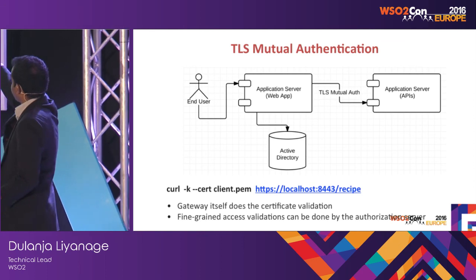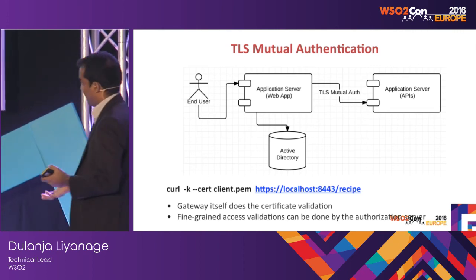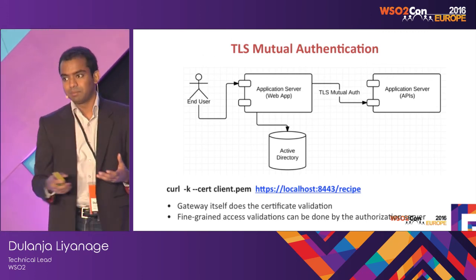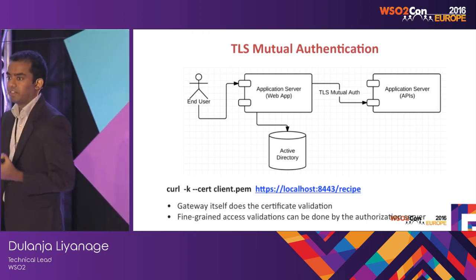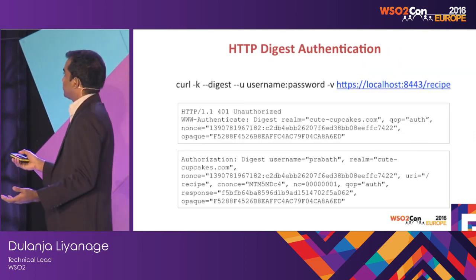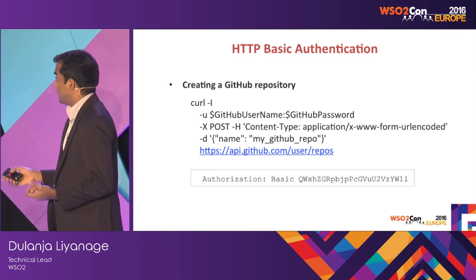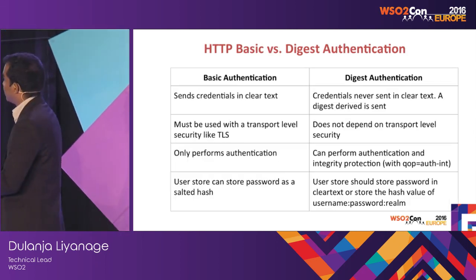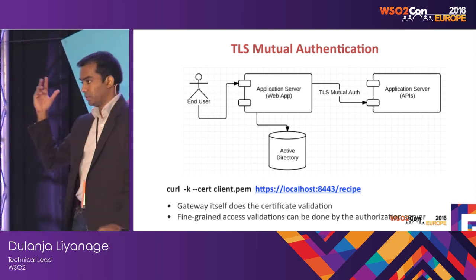If the web app is the entry point to your trusted boundary, from there onwards it doesn't need to use user credentials. Rather, it will authenticate using TLS mutual authentication. This API can be treated as a gateway of an API manager — it will do certificate validation and can also do fine-grained authorization if required, for example by taking the common name from the certificate. All three traditional mechanisms can be catered from the WSO2 API management platform.